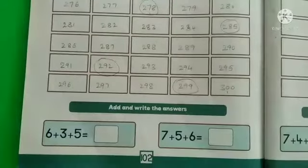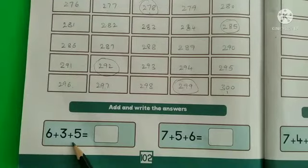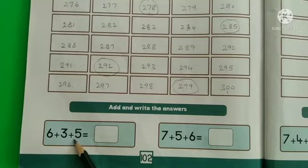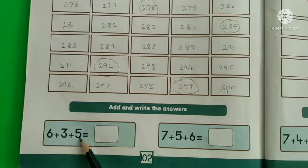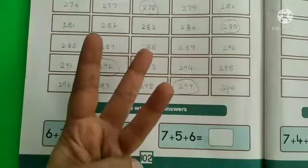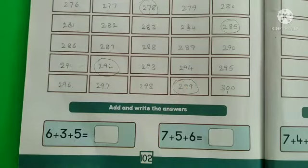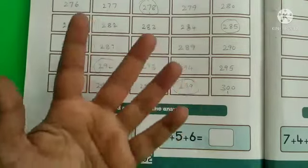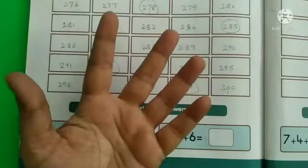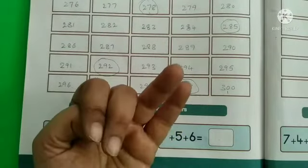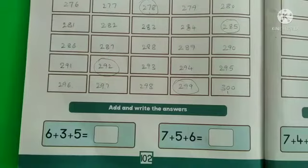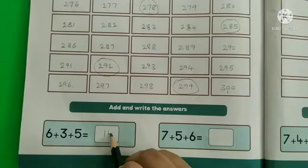Add and write the answers. Here they have given 3 numbers. Add these numbers and write the answers. Here 6 plus 3 plus 5. 6 is in the mind, 3 is in the finger. After 6: 7, 8, 9. Now 9 is in the mind, 5 is in the finger. After 9: 10, 11, 12, 13, 14. Write number 14 here.